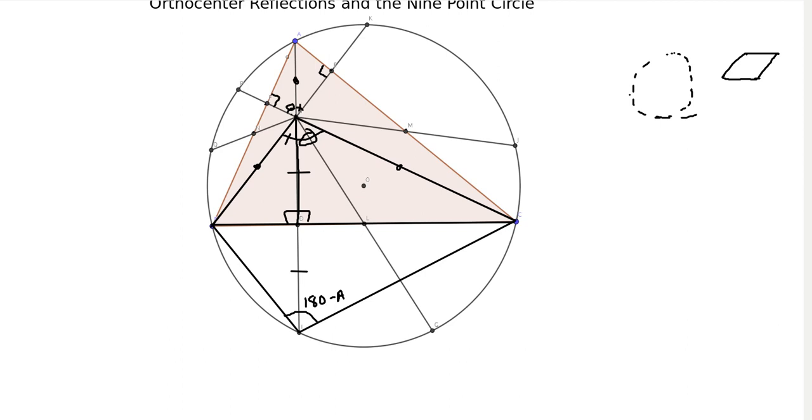So then we want to show that this angle is actually 180 minus A. But we know that AFHE, that's this quadrilateral right here. Well, we know that the sum of the angles in a quadrilateral is 360. And these two are 90, so they add up to 180. Which means these two add up to 180. So if this is A, right, this angle right here is A. Then this is 180 minus A. And so this is 180 minus A. And this is 180 minus A. So that means that these two triangles are congruent.